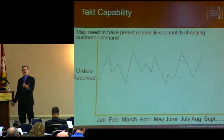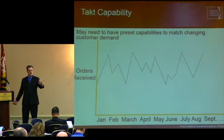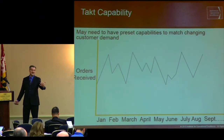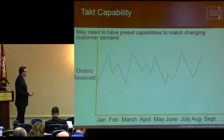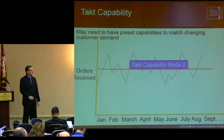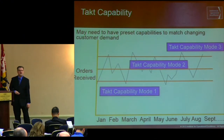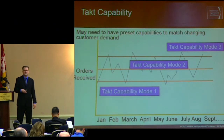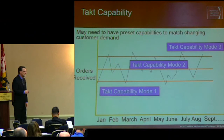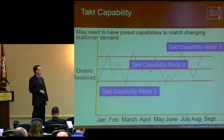So in the office, it's not about having a TAC time — it's having a TAC capability. That means: I don't know how often my customer wants us to do this service or function, but I know what we can do. I set a capability, and I might have different modes of capabilities that toggle with changing customer demand, depending on how frequently things happen.